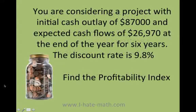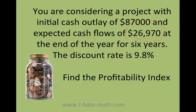Let's do an example. You are considering a project with an initial cash outlay of $87,000 and expected cash flows of $26,970 at the end of the year for six years. The discount rate is 9.8%. Find the profitability index.